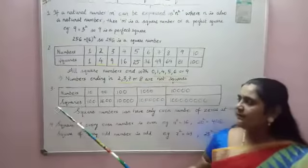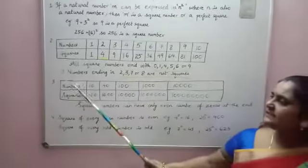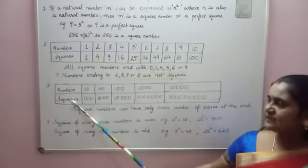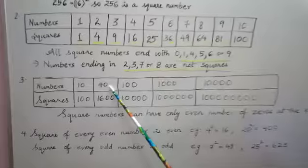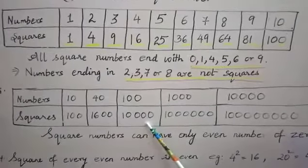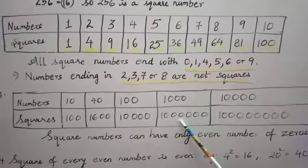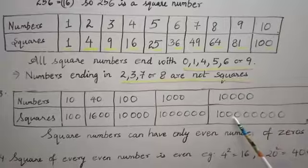Now, coming to the next property, you can again see a table over here which has the numbers and the squares as the rows. 10 square is 100, 40 square is 1600, 100 square is 10,000, 1000 square is 10 lakhs and 10,000 square is 10 crores.